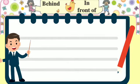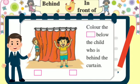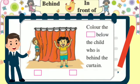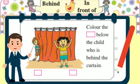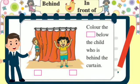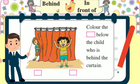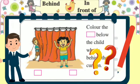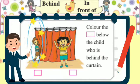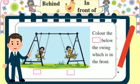Where is the vegetable basket? It is in front of the dog. Let's find examples from the textbook. Now let's find out who is behind the curtain — let's write and color the box.